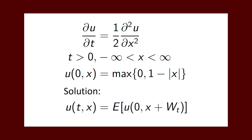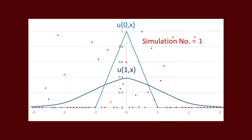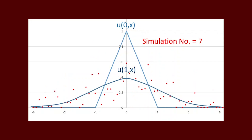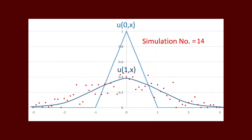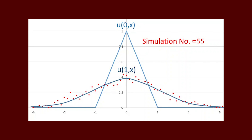That conditional expectation one can find in many different ways. One computational way is that one can simulate Brownian motion, evaluate the function f at the final time, and then take the average of that. That average is taken using finitely many samples, but as the sample size grows large and goes to infinity, that approximation of the solution converges to the solution itself.